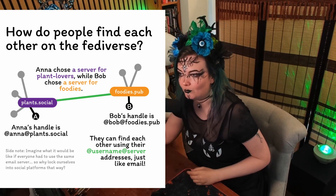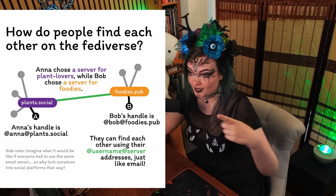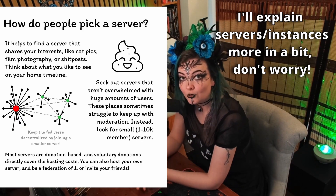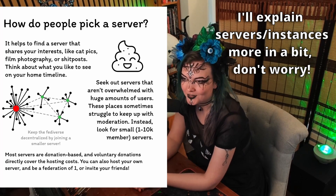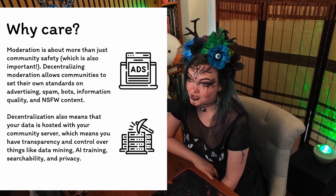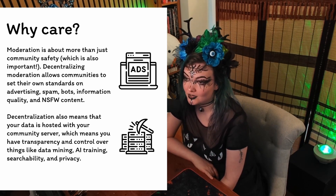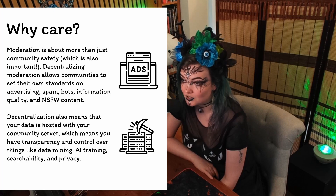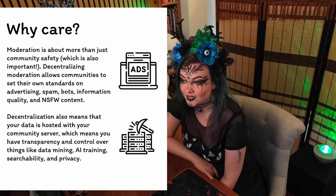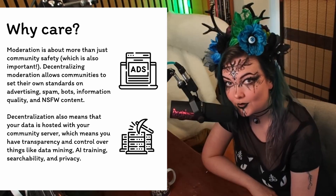How do people find each other on the Fediverse? They can find each other using their username and their server, just like email. Think about what you'd like to see in your home timeline. Decentralizing moderation allows communities to set their own standards on advertising, spam, bots, information quality, and NSFW content. You have transparency and control over things like data mining, AI training, searchability, and privacy. Keep that in mind.